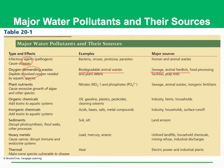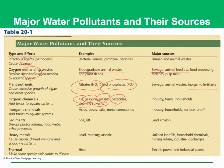Plant nutrients can cause excessive growth of algae and other species, which is known as eutrophication. The major nutrients to look at are nitrate and phosphate, and the major sources of these pollutants are sewage, animal waste, and inorganic fertilizers. There are also organic chemicals which add toxins to aquatic systems. For instance, oil, gasoline, plastic, pesticides, and cleaning solvents from industry, farms, and households can cause harmful effects to our ecosystem.